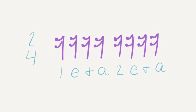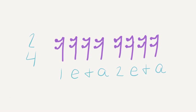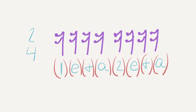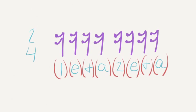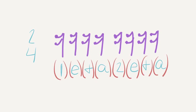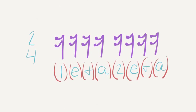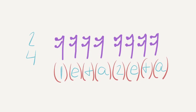You count sixteenth rests the same way that you count sixteenth notes. The difference is that with rests you count in your head. That's why these counts are in parentheses. 1-e-and-a, 2-e-and-a, just like sixteenth notes, but you say them in your head because these are beats of silence.